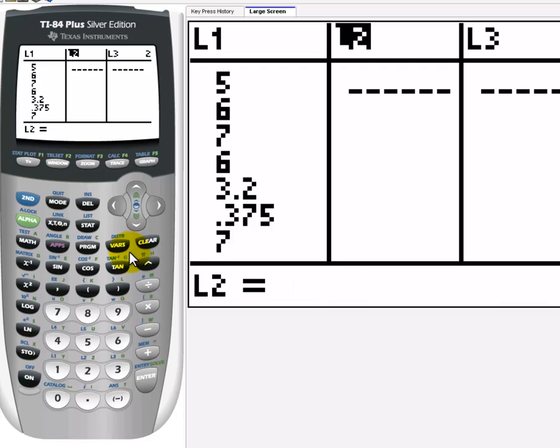I'm going to move over to L2. Because in list 2, I want all these data points again, but I want them doubled. And I don't want to have to work that out and calculate what they'd be and put them in.